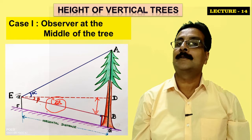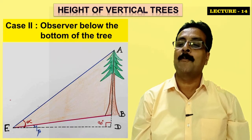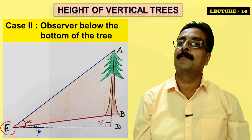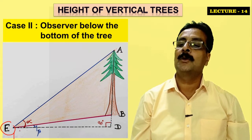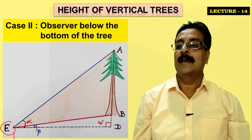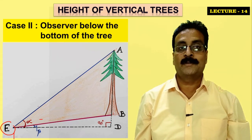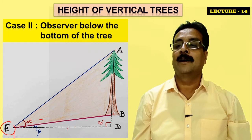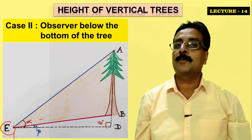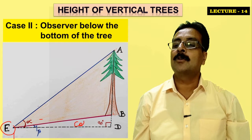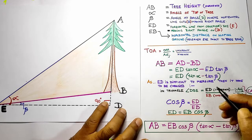Case 2 deals with the observer being below the bottom of the tree. The tree is above the observer — the observer is on a lower hill and the tree is on a higher hill. The important thing here is that EB can be measured, but ED cannot be measured because it is underground. Since we cannot dig underground to take the distance from E to D, we replace ED using the cosine method.